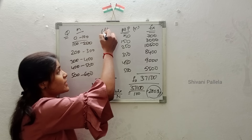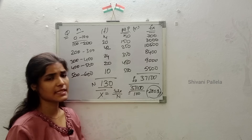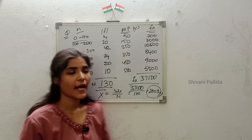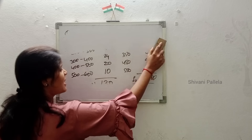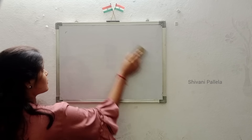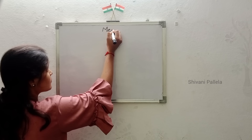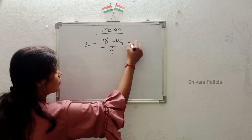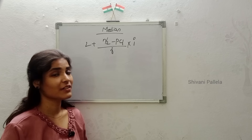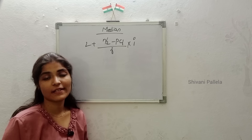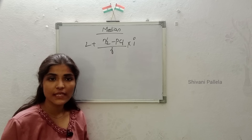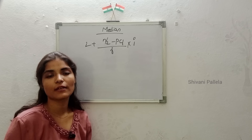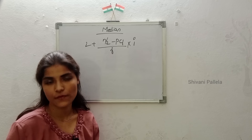Now we will discuss median, which is most important and very easy. The formula for median is: l plus (n/2 minus pcf) divided by f, multiplied by i. Sometimes they will also ask to find median plus quartiles. Whatever median we find here is the same as what we find in Bowley's skewness, so if you want quartiles explanation, please watch the Bowley's coefficient of skewness video.